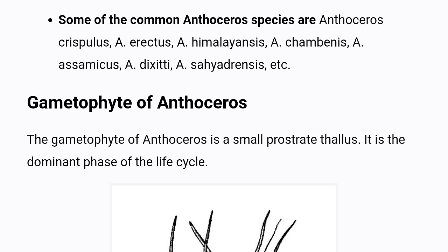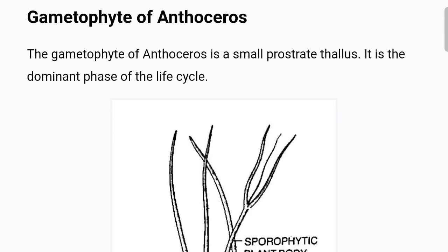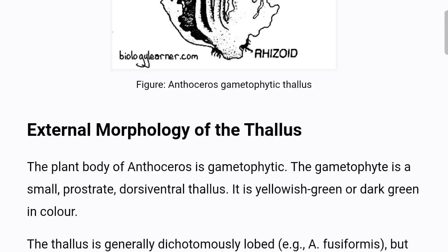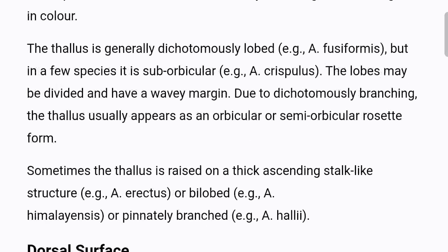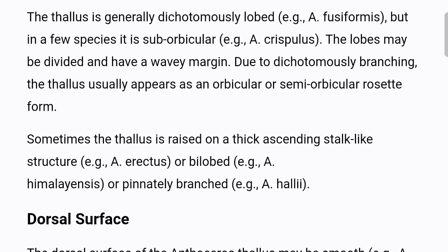The gametophyte of Anthoceros is a small prostrate thallus and is the dominant phase of the life cycle. The plant body of Anthoceros is gametophytic — a small, prostrate, dorsal-ventral thallus that is yellowish green or dark green in color. The thallus is generally dichotomously lobed, e.g. Anthoceros fusiformis, but in a few species it is suborbicular, e.g. Anthoceros crispulus.